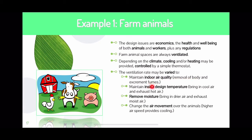Ventilation requirements include removal of body and extreme fumes — meaning the gases animals release, whether methane, decaying matter, or carbon dioxide. Also to maintain inside design temperature by bringing cool air in and exhausting hot air out, removing or introducing moisture via humidifier and dehumidifier, and changing air movement speed — higher speed provides more cooling during daytime, and slower air movement at night when animals are indoors.